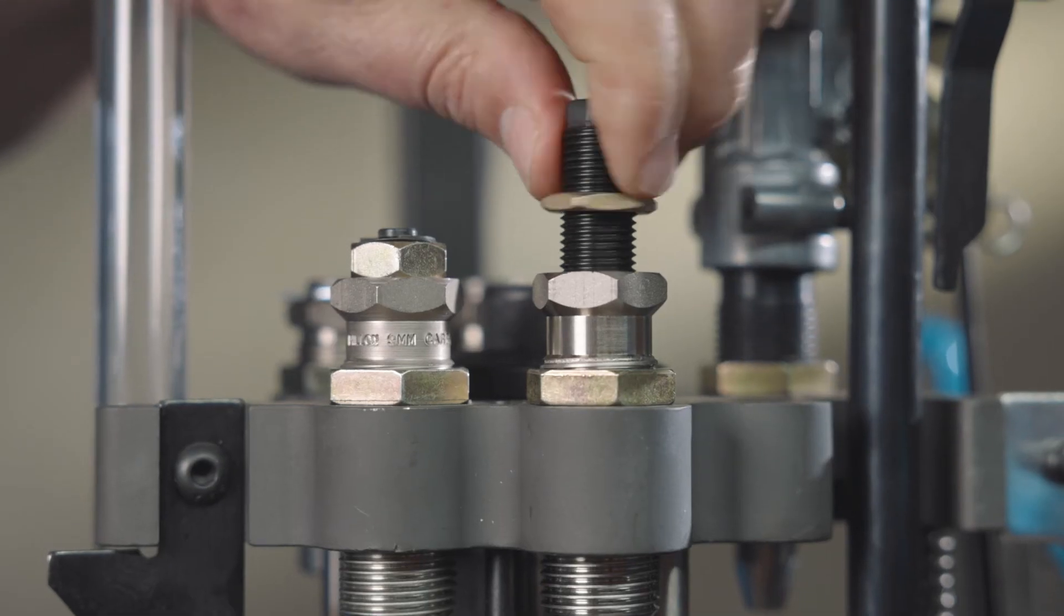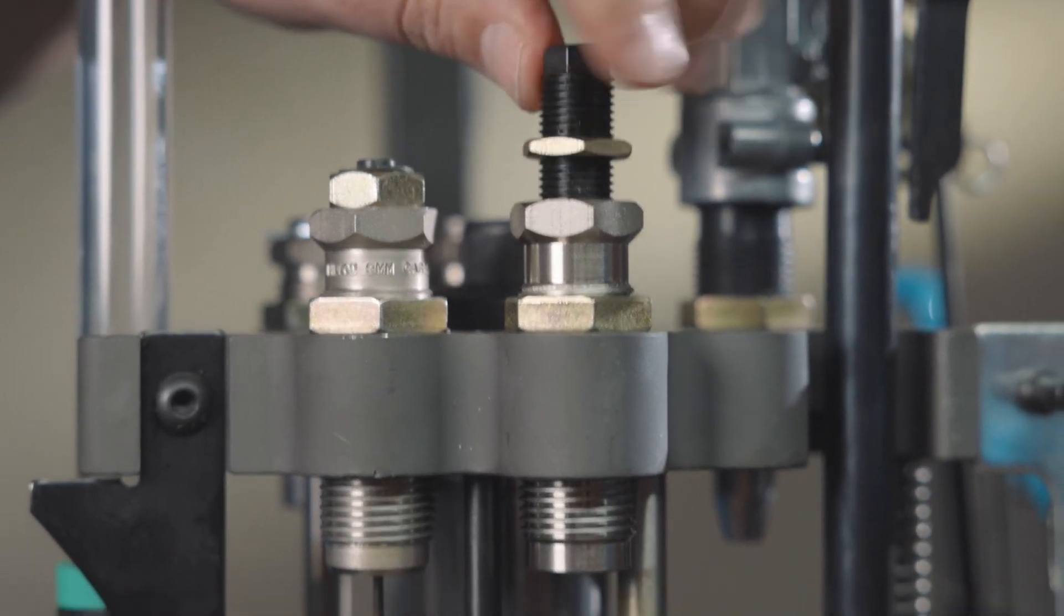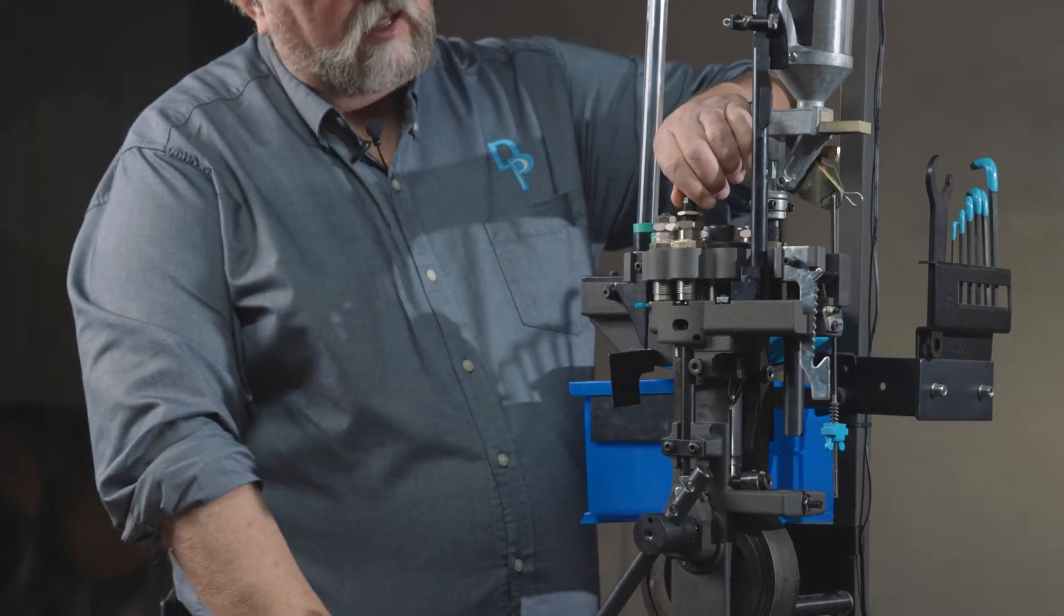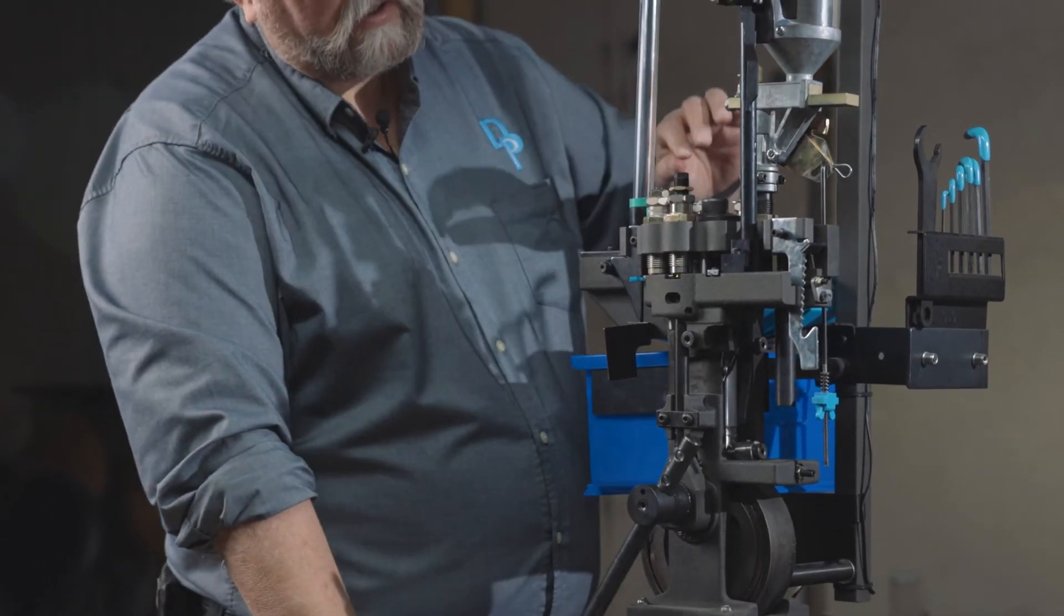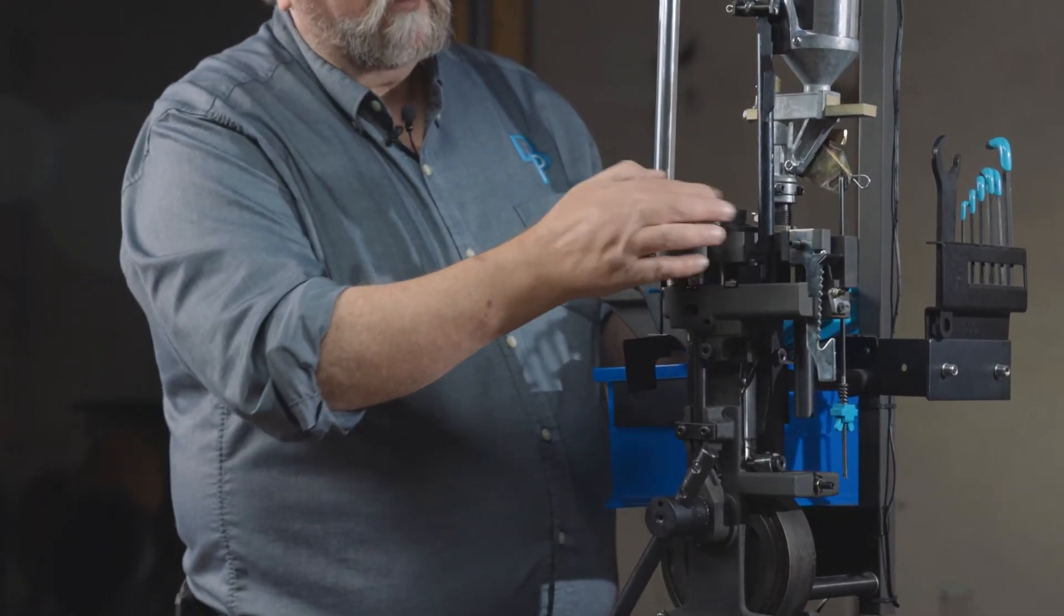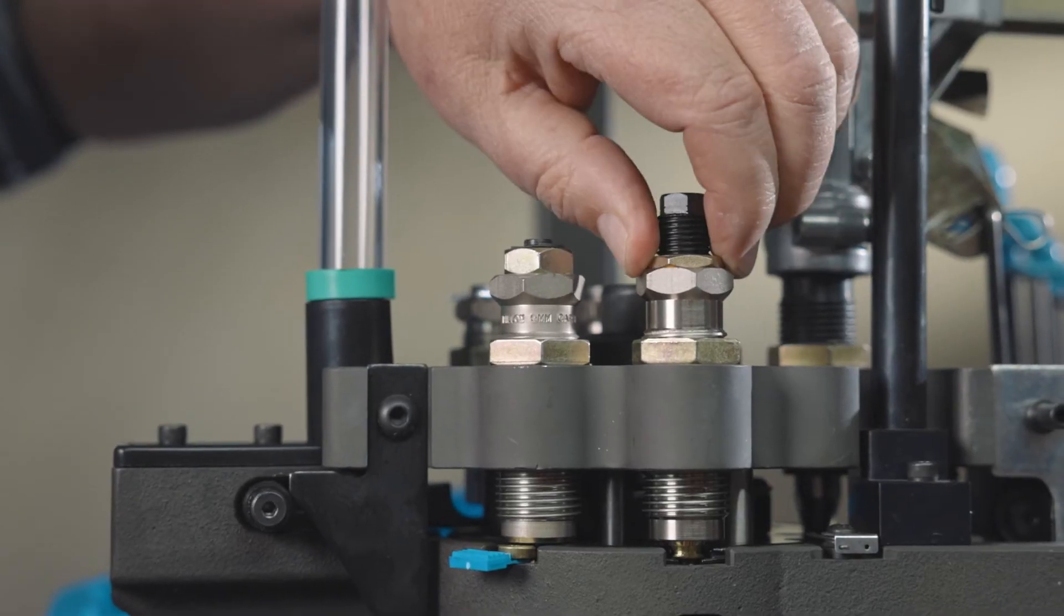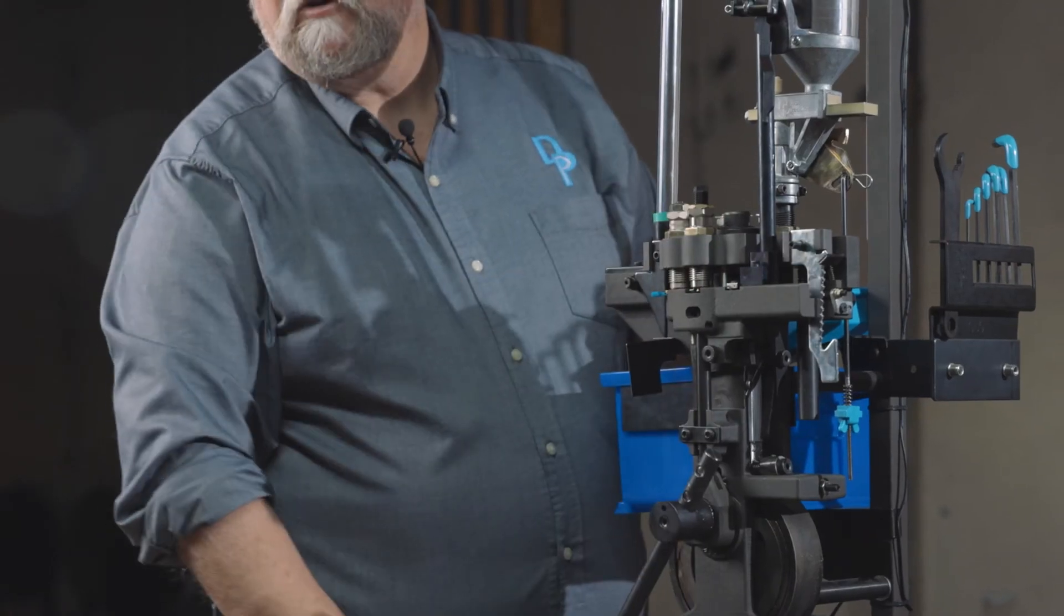With your fingers, screw it down until you feel it stop, lift up on the handle, turn it down about one half turn and tighten your lock rings under a load.